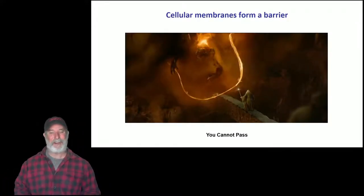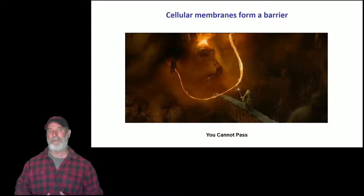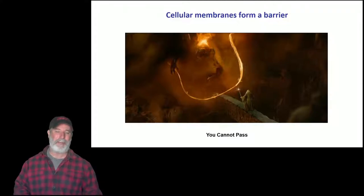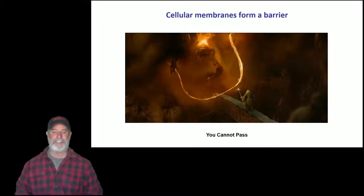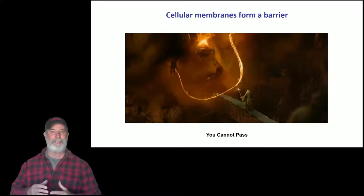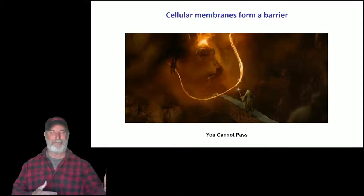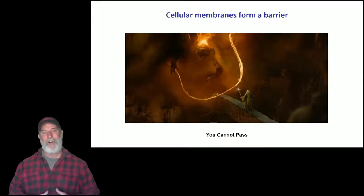Selective permeability — Gandalf facing down the Balrog of Morgoth is a great analogy: 'You shall not pass.' He lets the Fellowship of the Ring pass while stopping the Balrog. That's selective permeability — only certain things are allowed through.